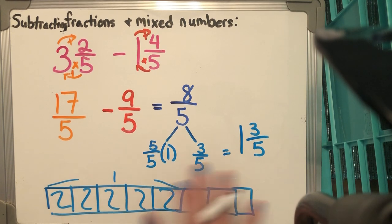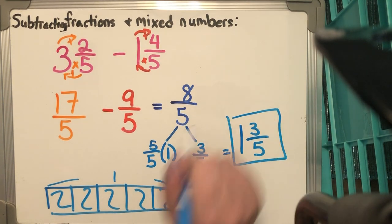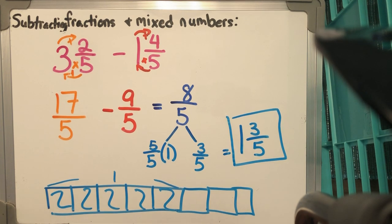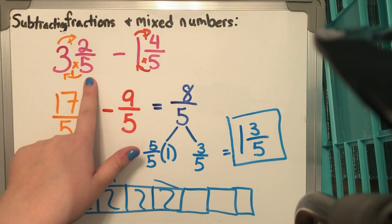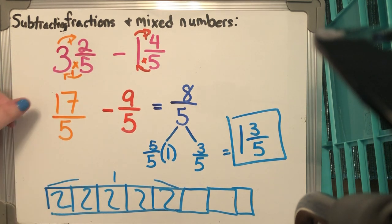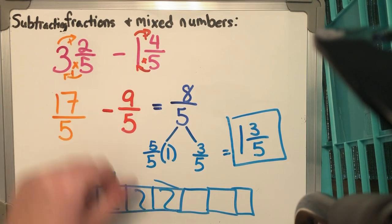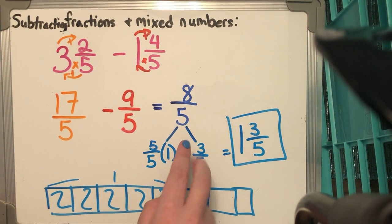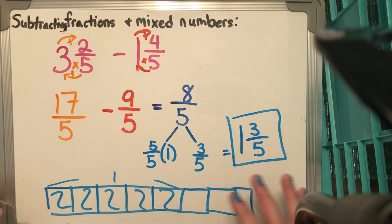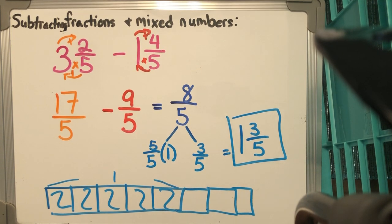I got the same exact answer as the previous method — just did it a different way. This way is a bit quicker. If you prefer the breaking-down method you're welcome to keep doing that; this is just another method. You multiply your denominator by the whole number, add the numerator to get your improper fraction, do the same to the other one, subtract, then split to get your mixed number. Alright guys, this was a quick review and something new — until the next video, bye!